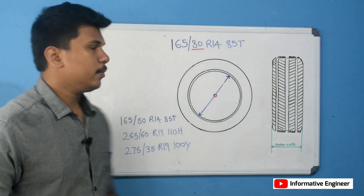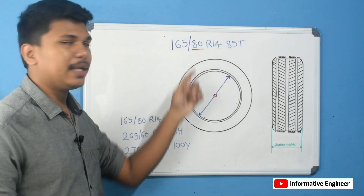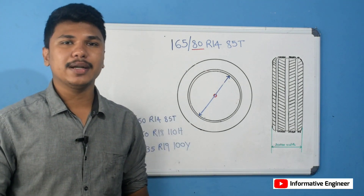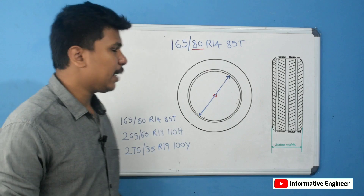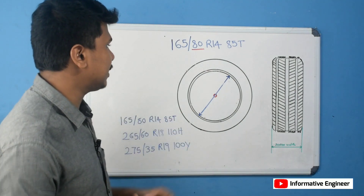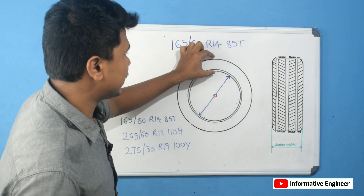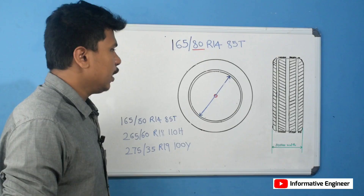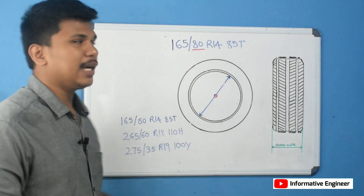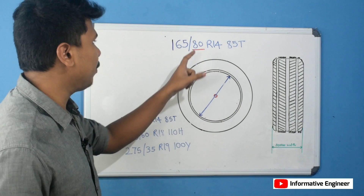The next value is the aspect ratio. The aspect ratio is the tire profile. The tire profile is the section height. The section height is the sidewall height, and the section height is the tire profile. This aspect ratio is a key number in the tire specification.